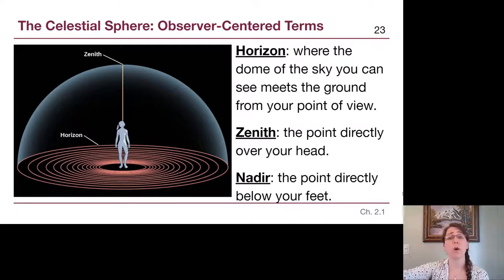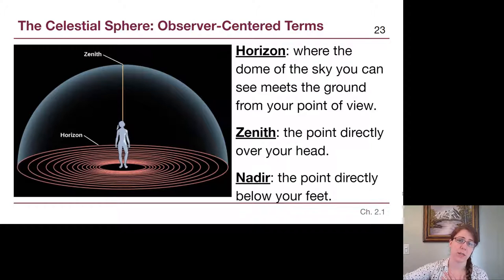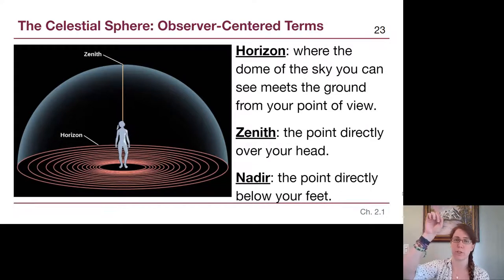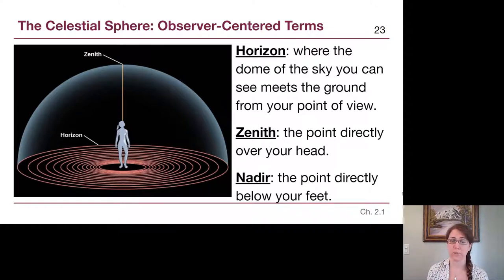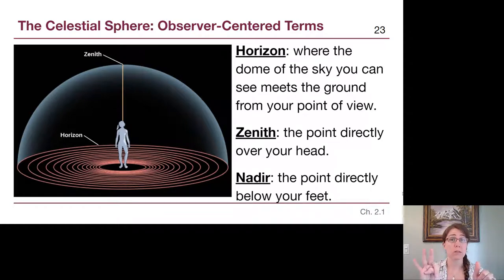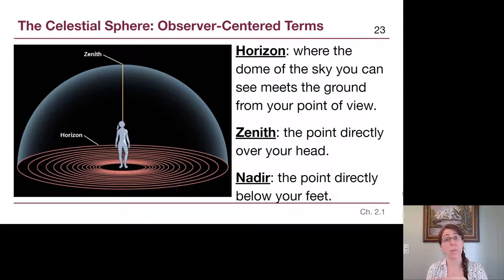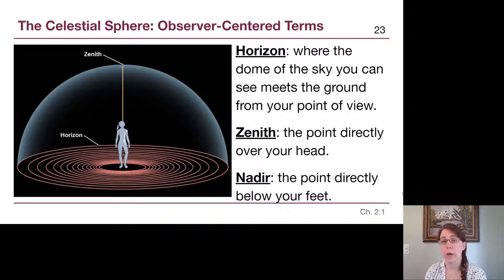The nadir is directly below our feet. Although there are stars in that direction, we cannot see them, so nadir is not nearly as important and probably won't appear again after this section. But it introduces the idea that when talking about general directions on the sky, we have six total ways: north, east, south, and west, plus up and down. We have a new special word for up — zenith — and a new special word for down — nadir.